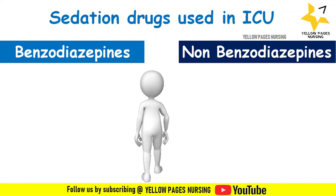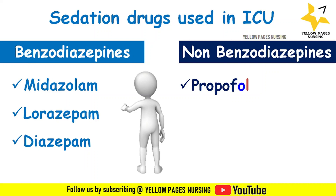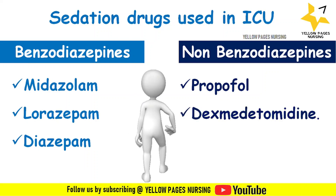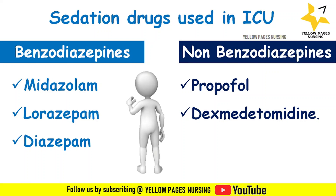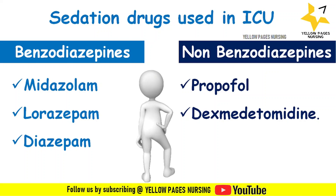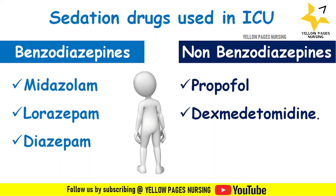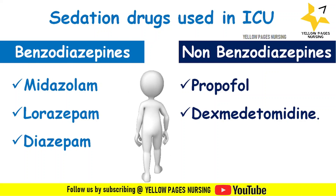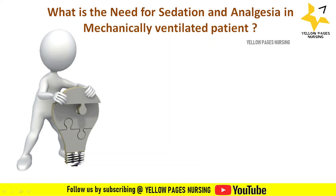Among benzodiazepines there are three types — long, intermediate, and short acting — for example midazolam, lorazepam, and to a lesser extent diazepam. The non-benzodiazepine sedatives are short-acting intravenous anesthetic agents, for example propofol and dexmedetomidine. A recent study shows that benzodiazepine-based sedative regimens are associated with longer ICU length of stay and duration of mechanical ventilation compared with non-benzodiazepine sedatives like propofol and dexmedetomidine.